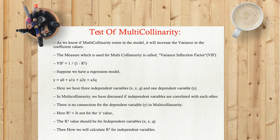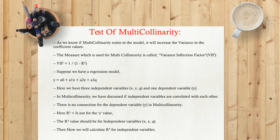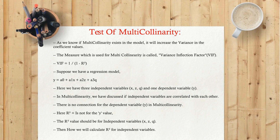Suppose we have a regression model: Y equals A0 plus A1X plus A2Z plus A3Q. Here we have three independent variables — X, Z, and Q — and one dependent variable Y. In multicollinearity, we are concerned with whether independent variables are correlated with each other, not with the dependent variable Y. Therefore, the R-squared value here is not for Y — it should be calculated for the independent variables X, Z, and Q.